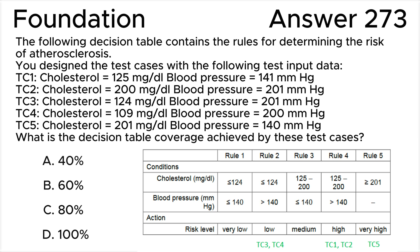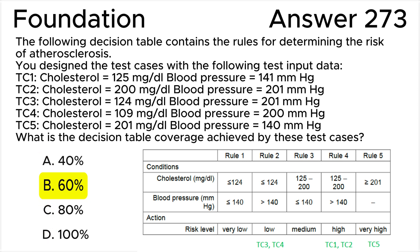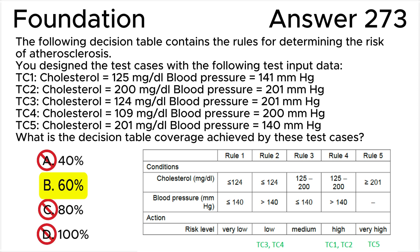Test case 5 covers rule 5. So these five test cases cover three out of five columns, achieving a coverage of 3/5. Three-fifths times 100% equals 60%. Therefore, option B is the correct answer, and options A, C, and D are incorrect. Decision table questions are the most voluminous and complex in the entire exam and require a lot of time to solve.